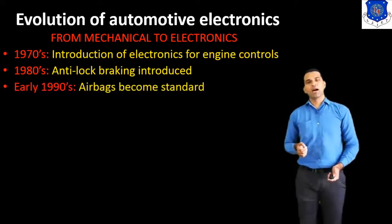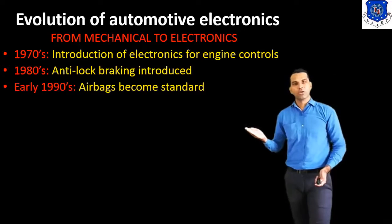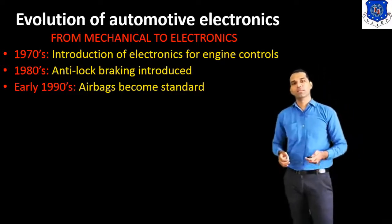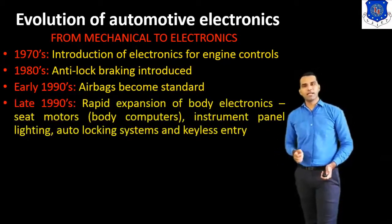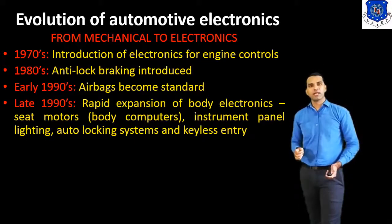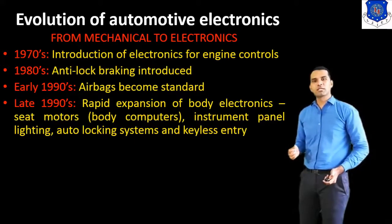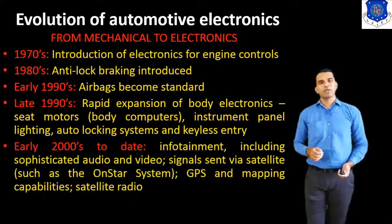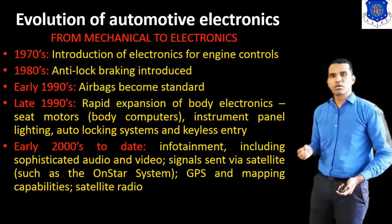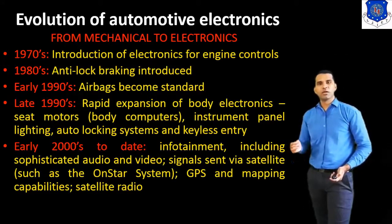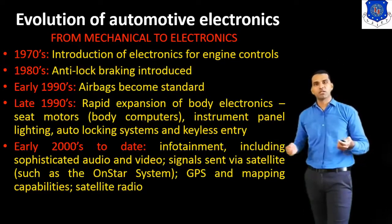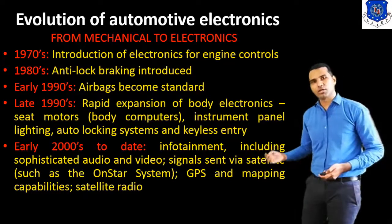In the early 1990s, the airbag became standard, introduced for safety purposes inside vehicles. In the late 1990s, there was rapid expansion of body electronics — seat monitors, instrument panel, lighting, auto-locking systems, and keyless entry systems. In the early 2000s, systems introduced include infotainment management, sophisticated audio and video systems, satellite signal, navigation, GPS and other navigation systems inside the car.